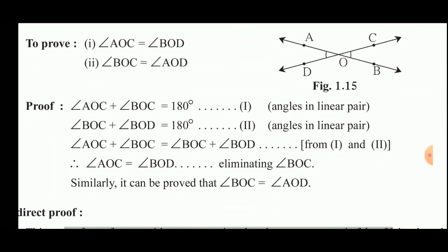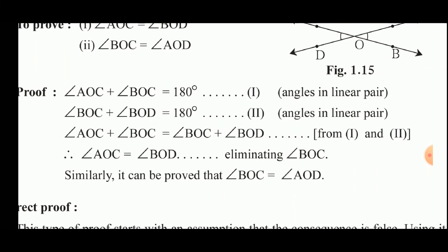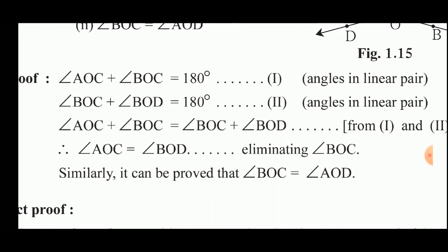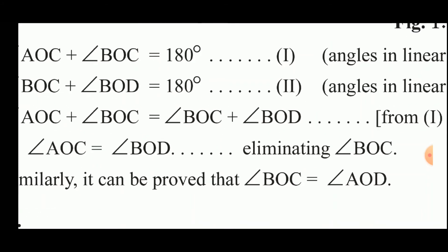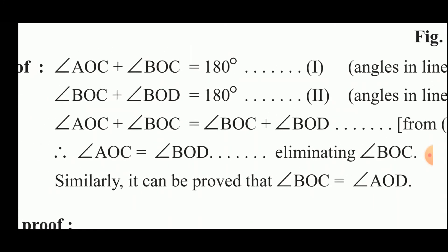Proof: refer to the figure. First line of the proof — angle AOC plus angle BOC equals 180 degrees (angles in a linear pair). Then, angle BOC plus angle BOD also equals 180 degrees (angles in a linear pair). Comparing statements 1 and 2, the right-hand side is equal (180 degrees), so the left-hand sides must also be equal: angle AOC plus angle BOC equals angle BOC plus angle BOD. Angle BOC cancels from both sides.